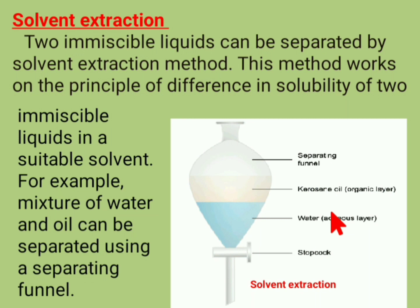A mixture of water and kerosene is taken in a separating funnel. The mouth of the separating funnel is closed and the mixture is allowed to stand for 15 minutes. The less dense layer, kerosene, remains in the upper layer and the denser liquid, water, remains in the lower layer. Water and kerosene are thus separated by the process using the separating funnel.